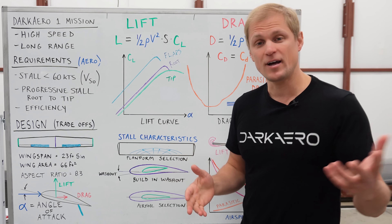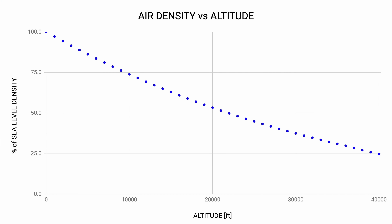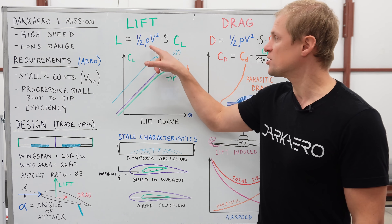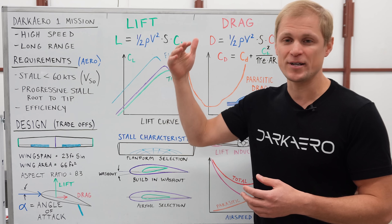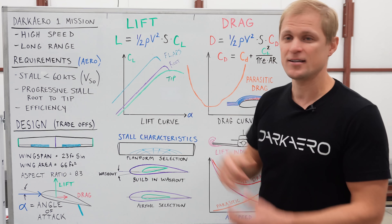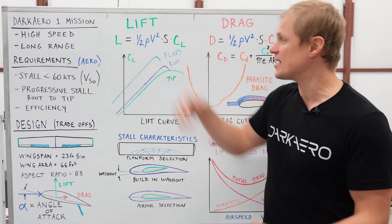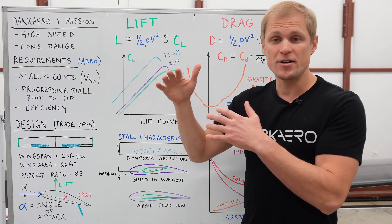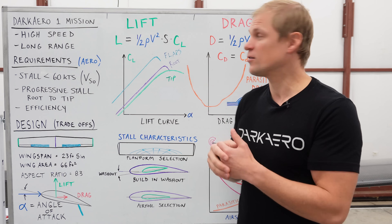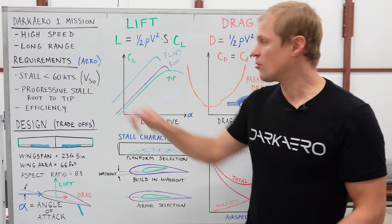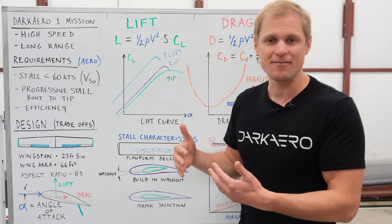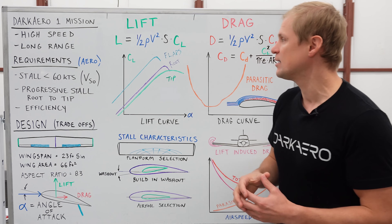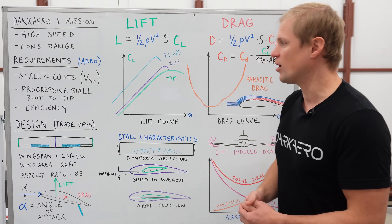The basic lift equation is: L = ½ρV²SCL. One-half rho V squared is our dynamic pressure — basically the kinetic energy of the airflow. Rho is air density, a function of altitude; density is highest at sea level and drops as we climb. Lift is proportional to density, so the wing makes more lift in denser air at lower altitudes. V is airspeed — lift is proportional to velocity squared, so doubling airspeed quadruples lift. This is critical for our stall speed requirement, since velocity is lower near stall during takeoff and landing.